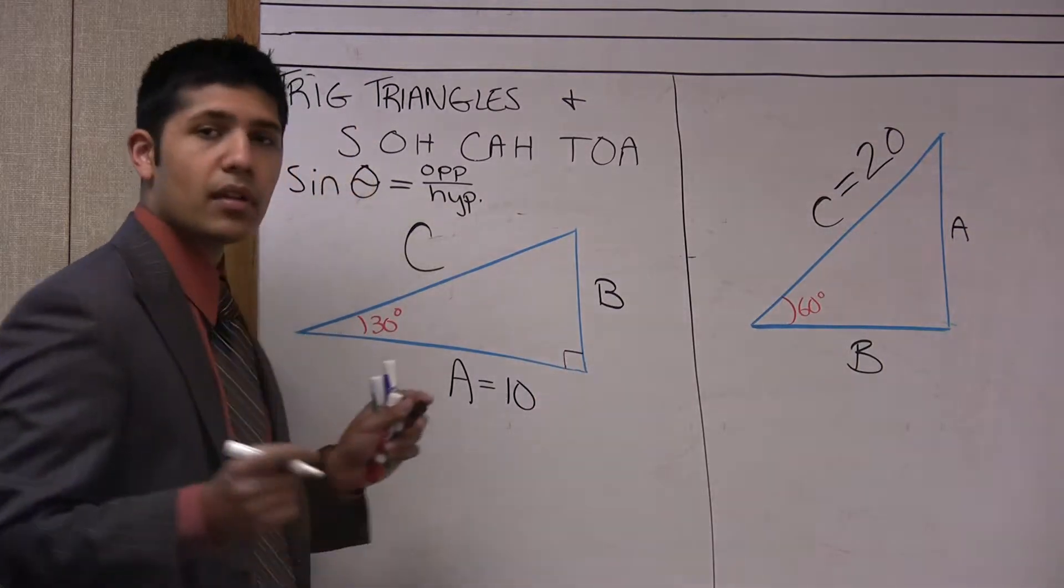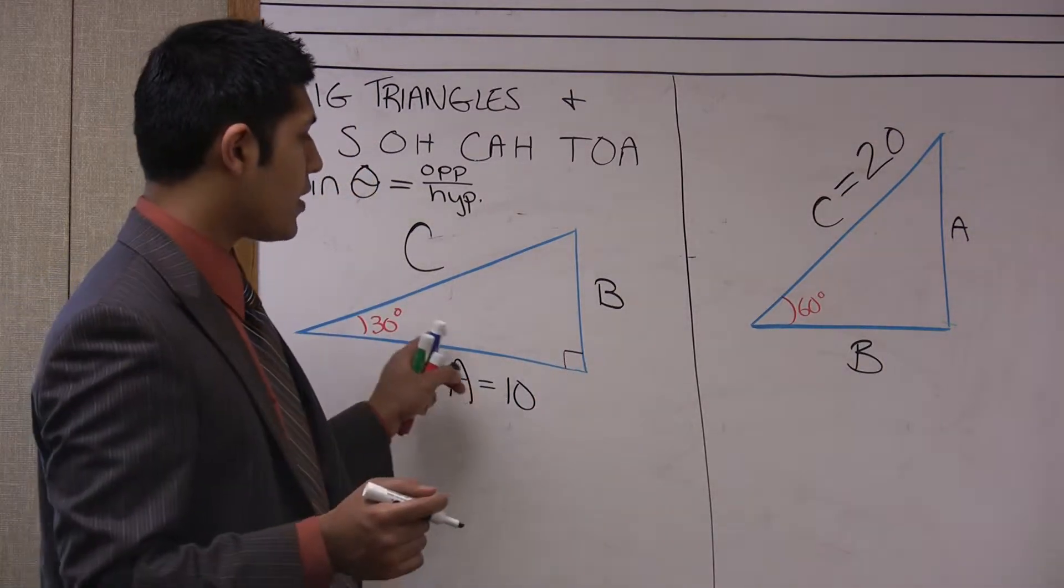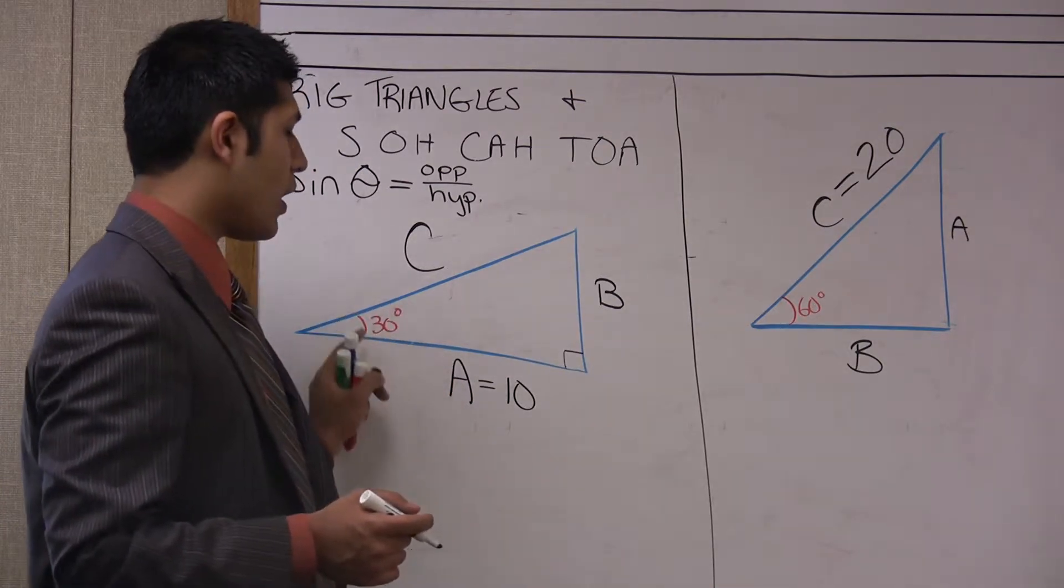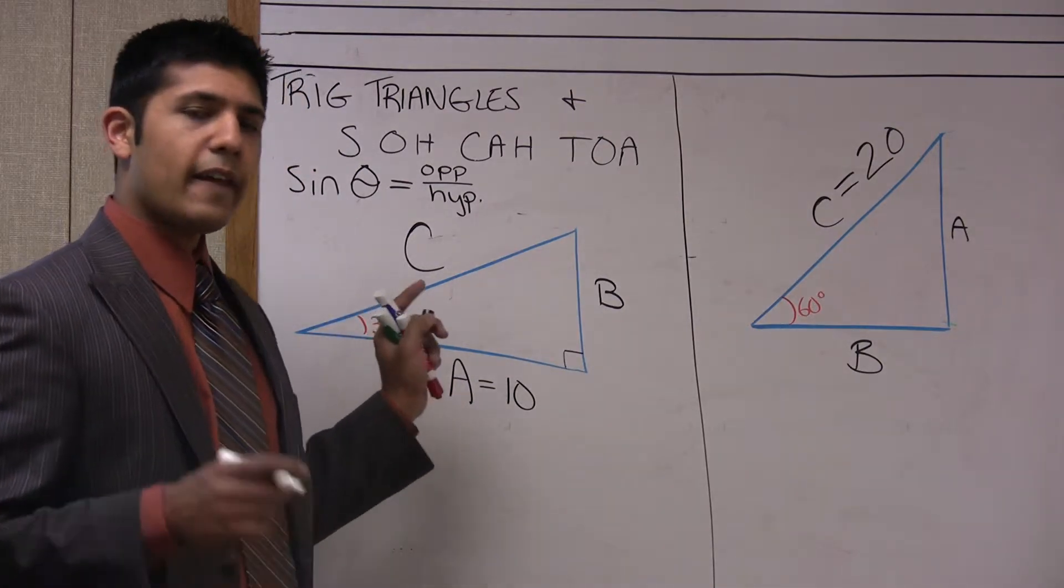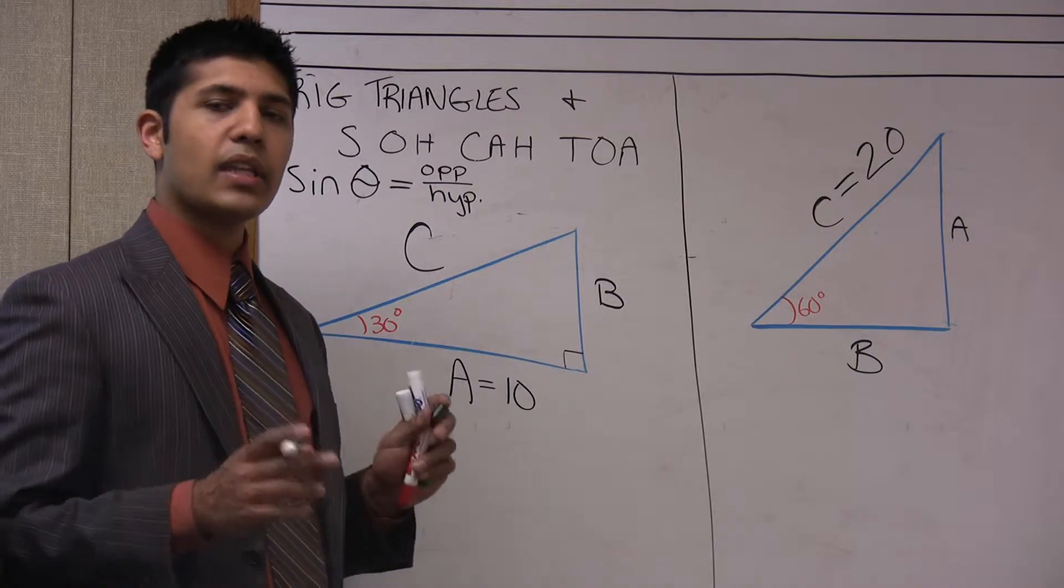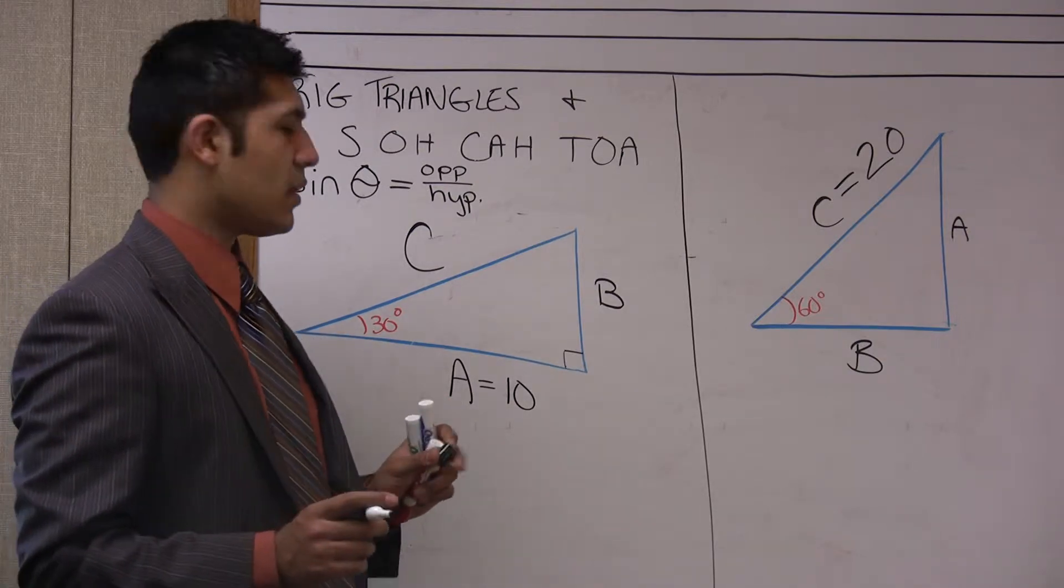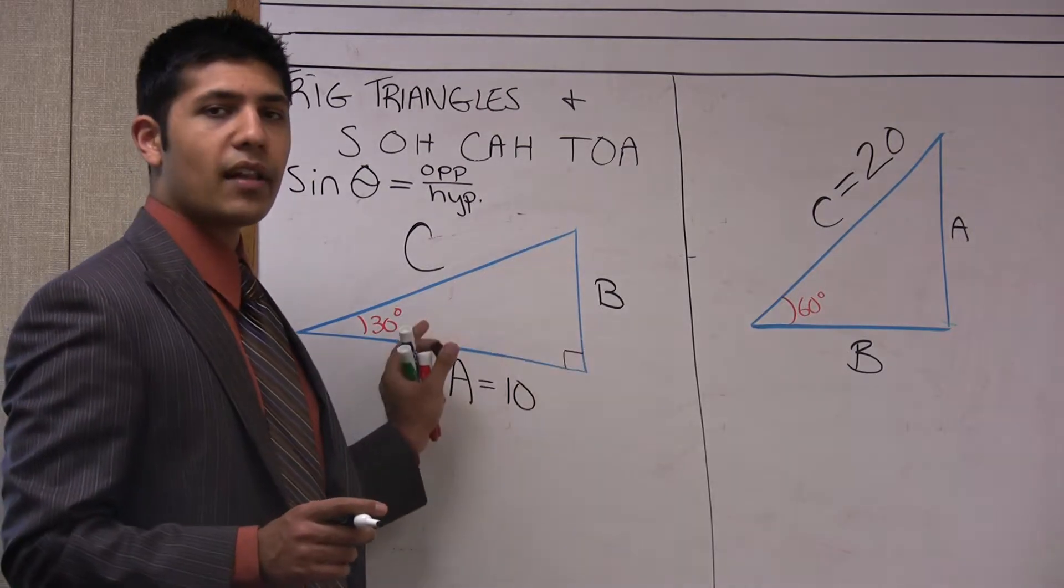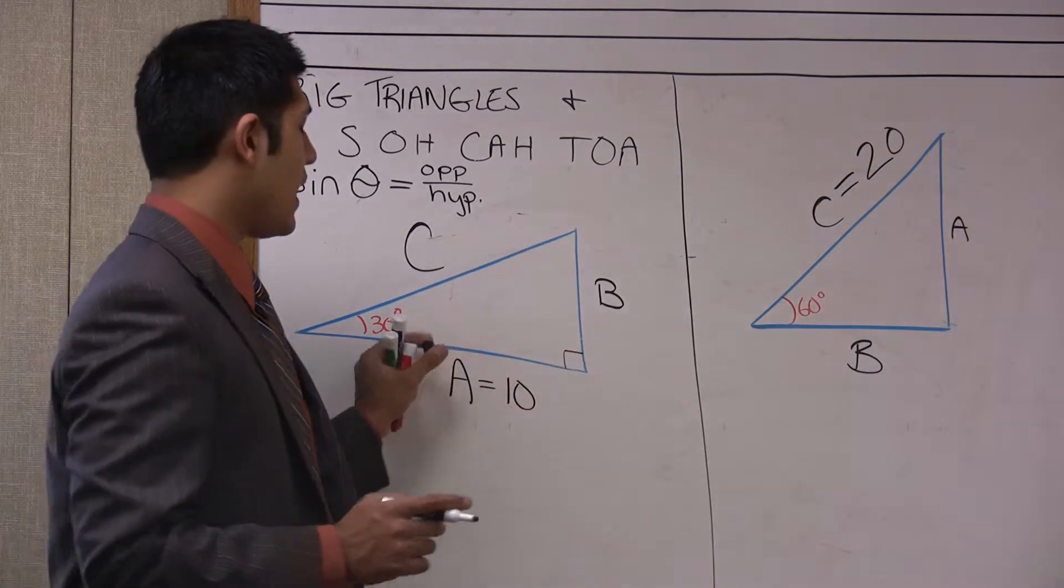With this triangle that we have here, the right angle is on this side. The right angle is pretty typical to pick out—it's the one that looks like a 90 degree angle. Now we know that all of the interior angles of a triangle add up to 180 degrees.